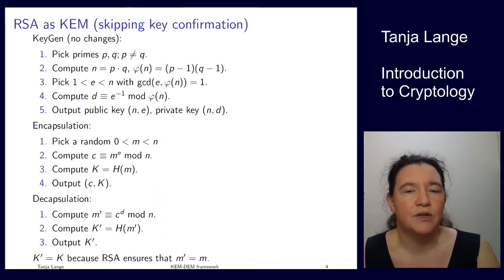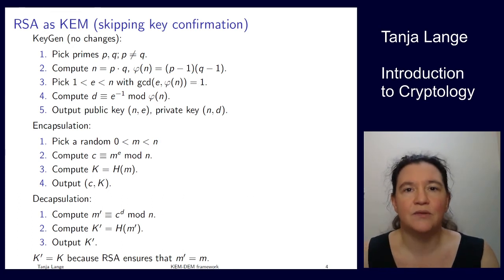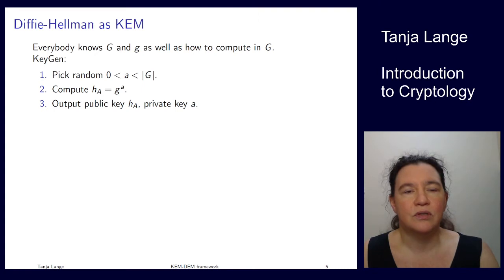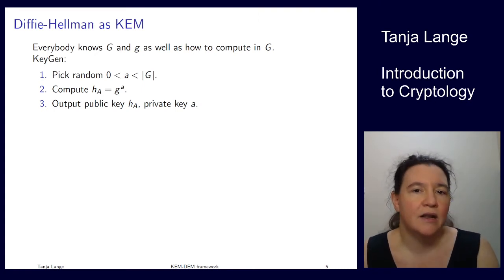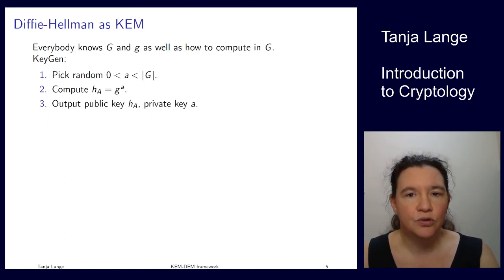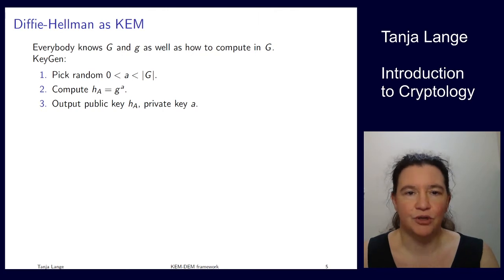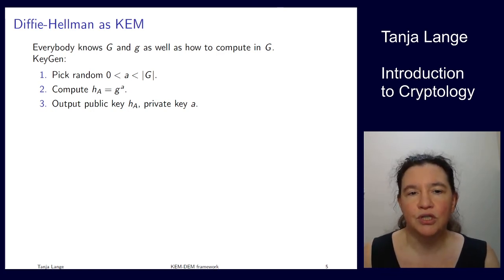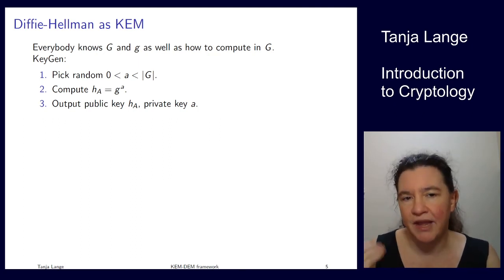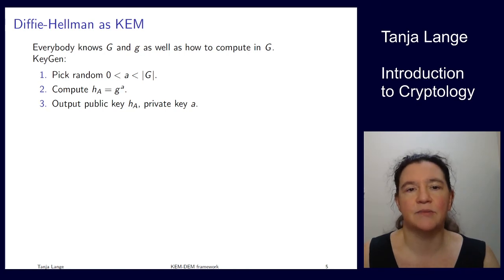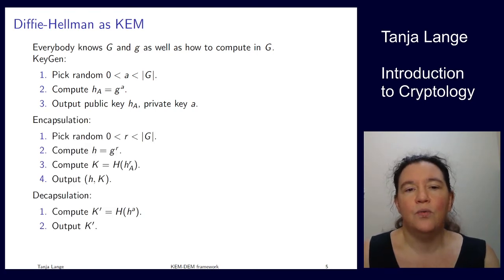For ElGamal, we can also build a KEM, but let's go back to Diffie-Hellman itself. Diffie-Hellman assumes everyone knows a certain group, a generator for this group, and how to compute in it. The strong group is the multiplicative group of integers mod p, and the weak group is the additive group. Key generation is the same as Diffie-Hellman: pick a number less than the group order, compute g^a in the group (typically g^a mod p), so the public key is the result of this exponentiation and the private key is the exponent a.